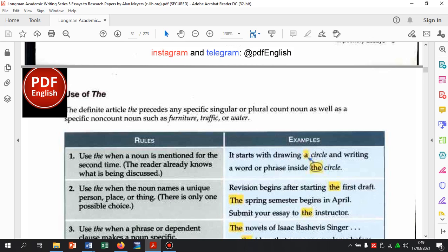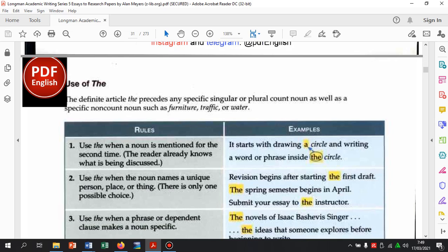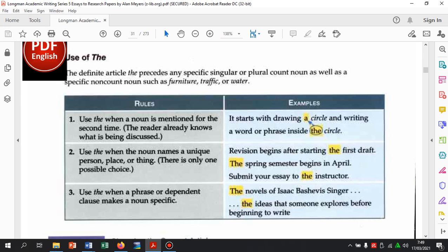Use the when a noun is mentioned for the second time. Jadi, ketika sudah disebutkan kedua kalinya, dijelaskan keberikutnya, jangan pakai a lagi. Jadi, pakai the. Supaya apa? The reader already knows what is being discussed. Jadi, pembaca itu sudah tahu apa yang dibahas. Contoh. It starts with a circle and writing a word or phrase inside the circle. Sudah dibahas circle di sini. Dia mulai dengan menggambar sebuah lingkaran. Kemudian apa? Writing a word or phrase inside the circle. Tulis kata ataupun frasa di dalam lingkaran tersebut.